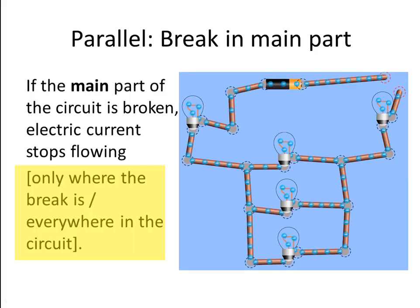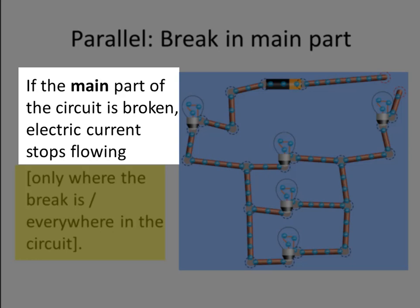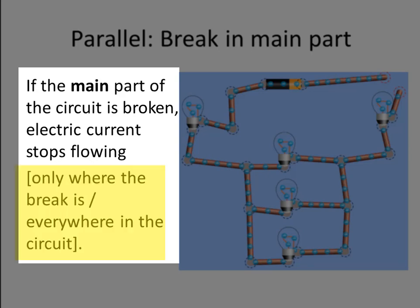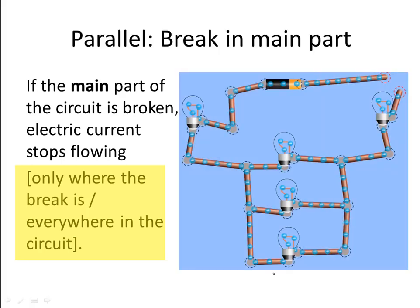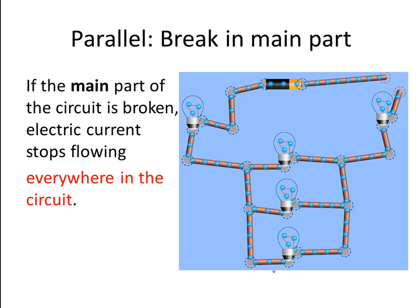Let's summarize: if the main part of a parallel circuit is broken, electric current stops flowing everywhere in the circuit — not just where the break is. So breaking a parallel circuit in the main part is like breaking a series circuit: everywhere just stops, current stops flowing throughout the circuit, and all the bulbs stop shining.